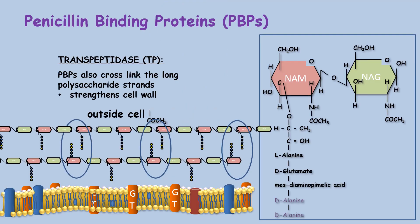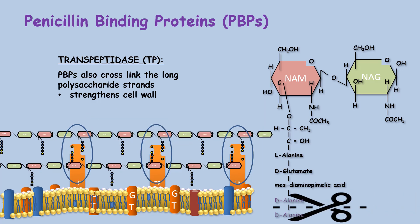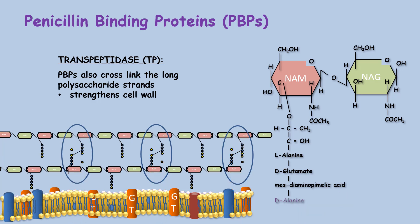Only when the polysaccharide chains are interconnected will the peptidoglycan be strong enough to prevent the cell from dying through osmolysis. The penicillin binding proteins bind to the pentapeptides of the NAM subunit and remove the terminal D-alanine amino acid from that pentapeptide. They then link the two peptides from adjoining peptidoglycan strands, covalently linking the many strands together and strengthening the peptidoglycan layer in the process.